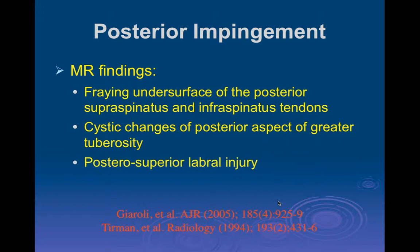What do we look for on MR examination for posterior impingement? The characteristic findings are: fraying of the undersurface of the posterior supraspinatus and infraspinatus tendons, cystic changes in the posterior aspect of the greater tuberosity (because that's where the bones bang together), and posterior superior labral tears.